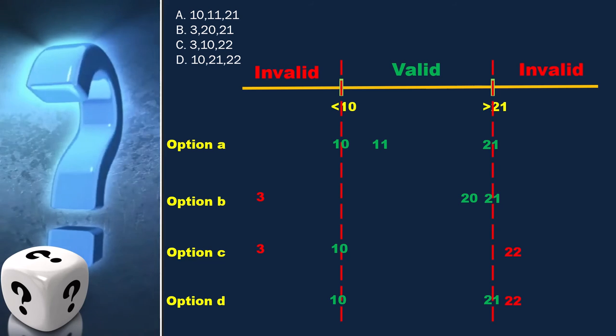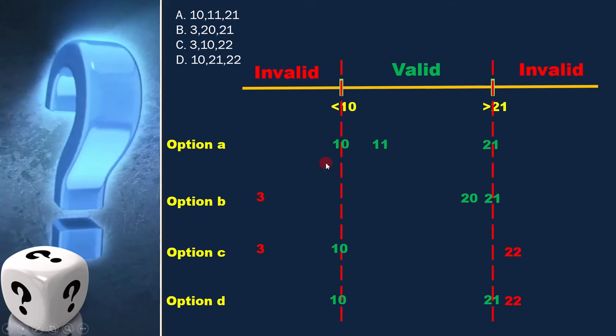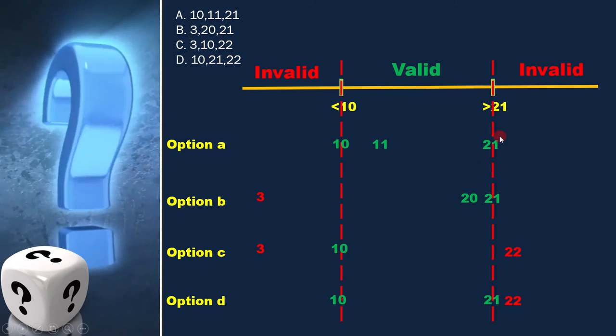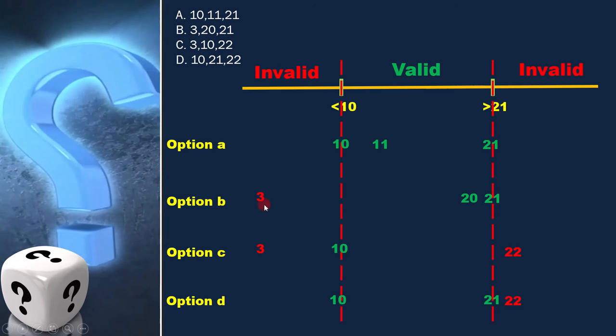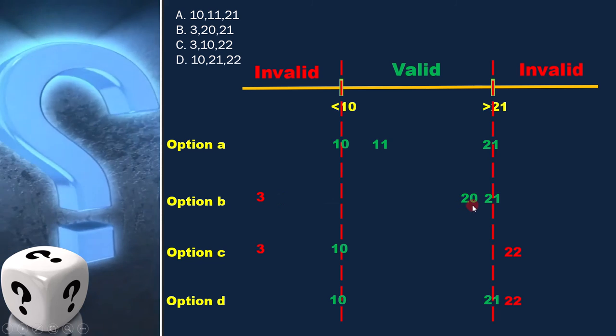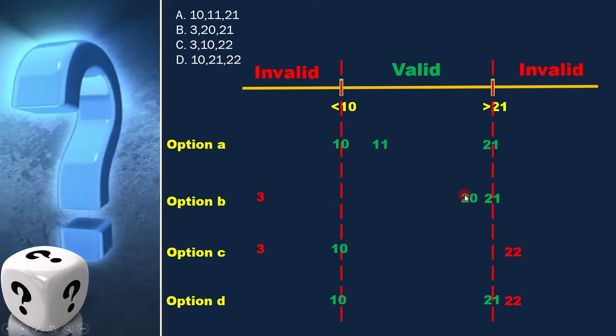In option A, 10, 11, and 21 are in valid range. In option B, 3 is invalid, whereas 20 and 21 are in valid range.